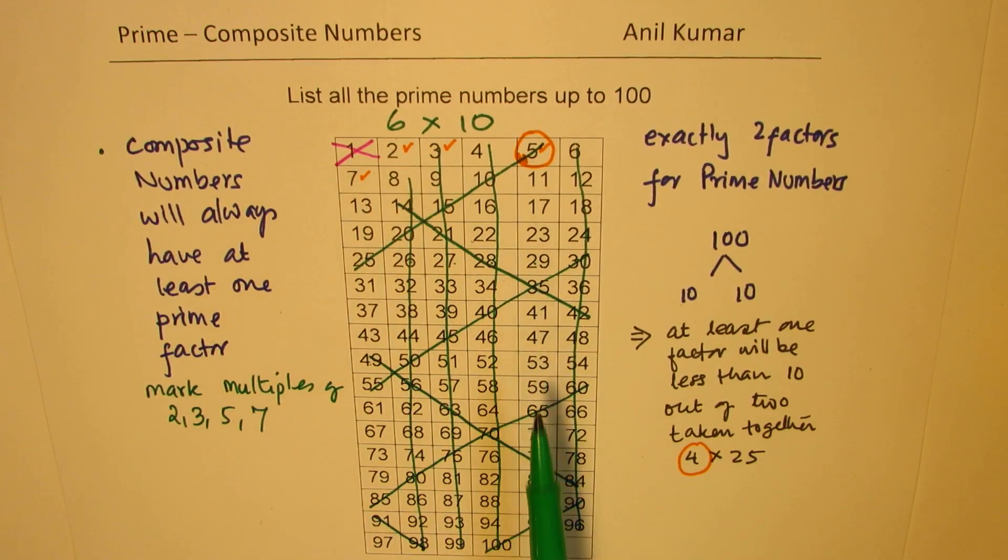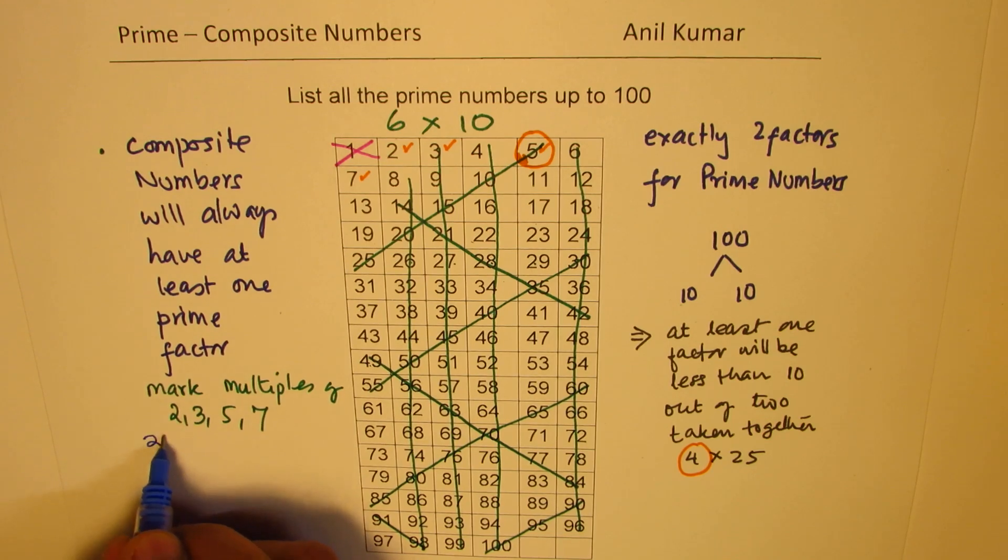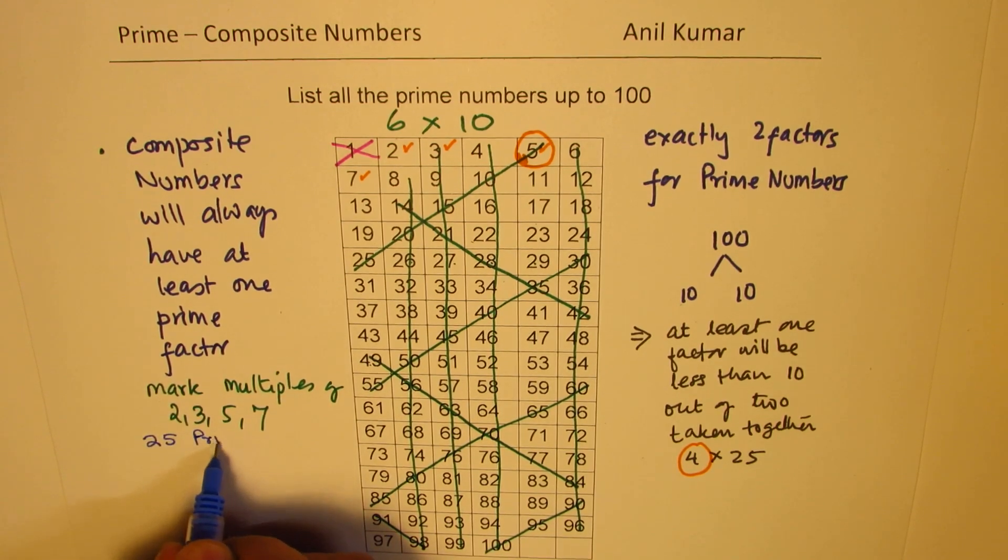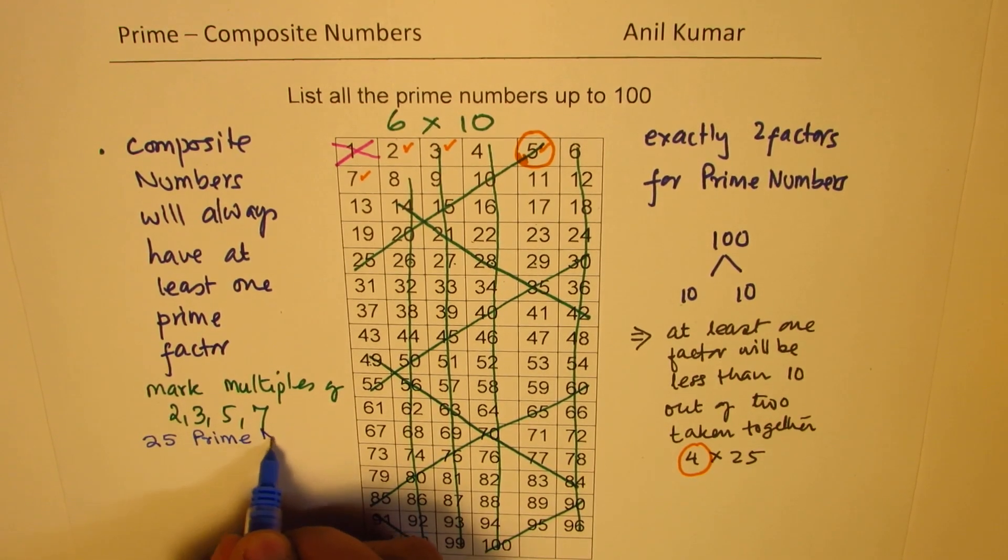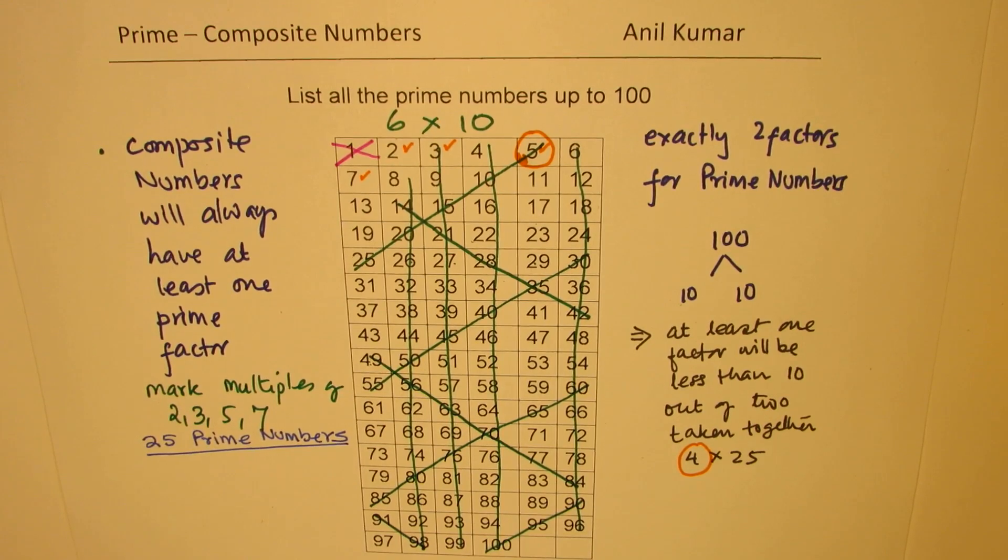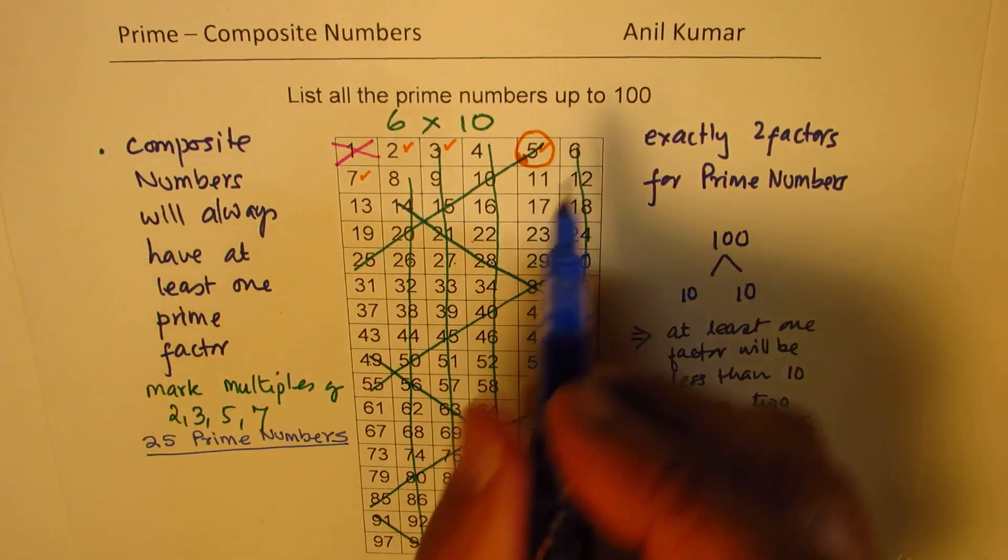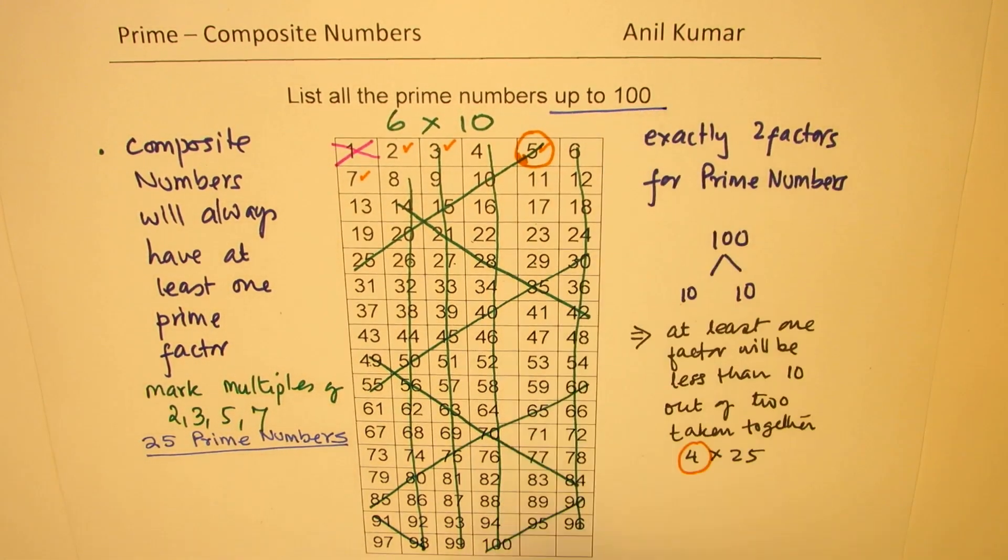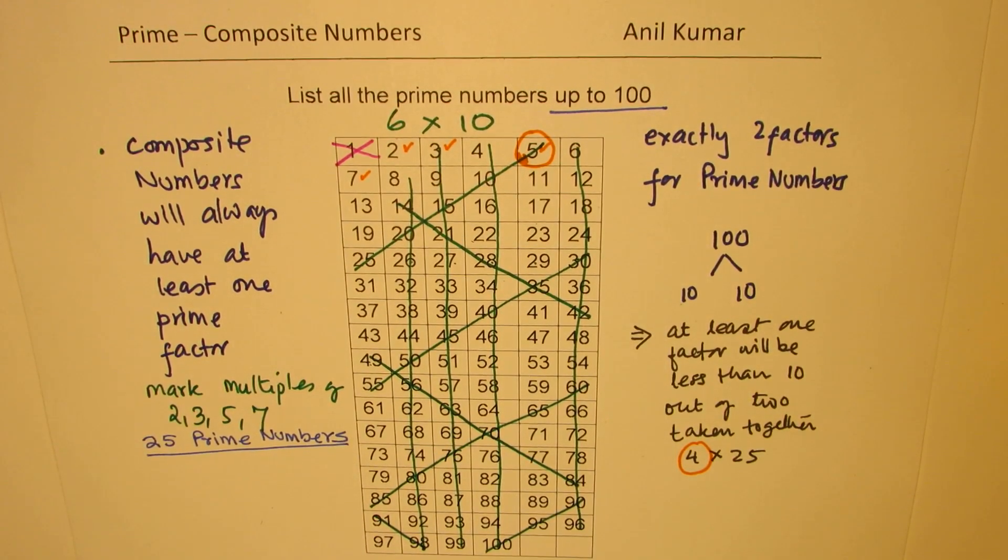All the remaining numbers are actually prime numbers. You note that. All the remaining numbers are the prime numbers. So how many numbers remain here? So there are 25 prime numbers. When we are considering numbers less than 100, we're talking about numbers up to 100. Now, let's list them all.